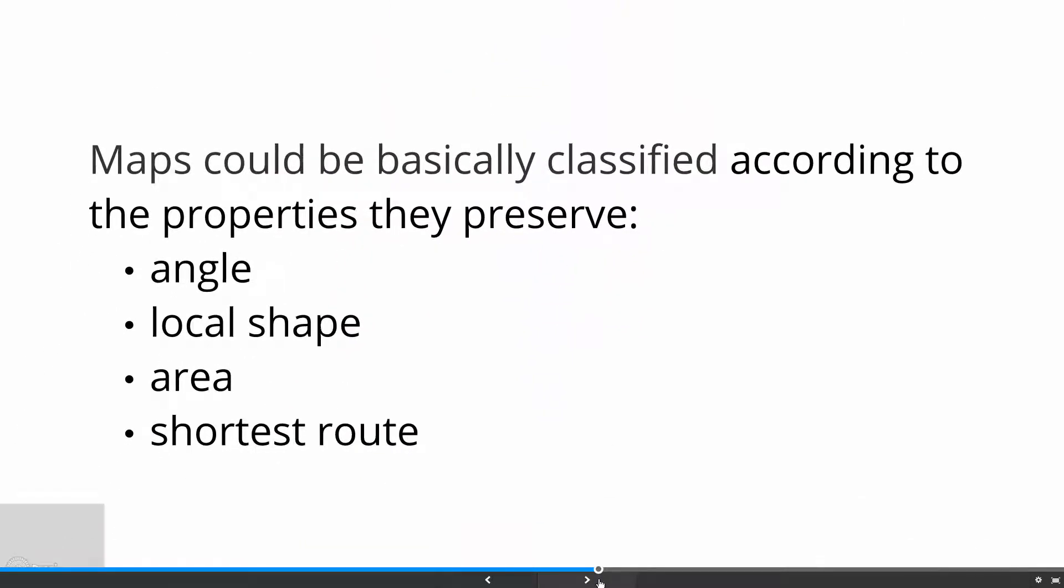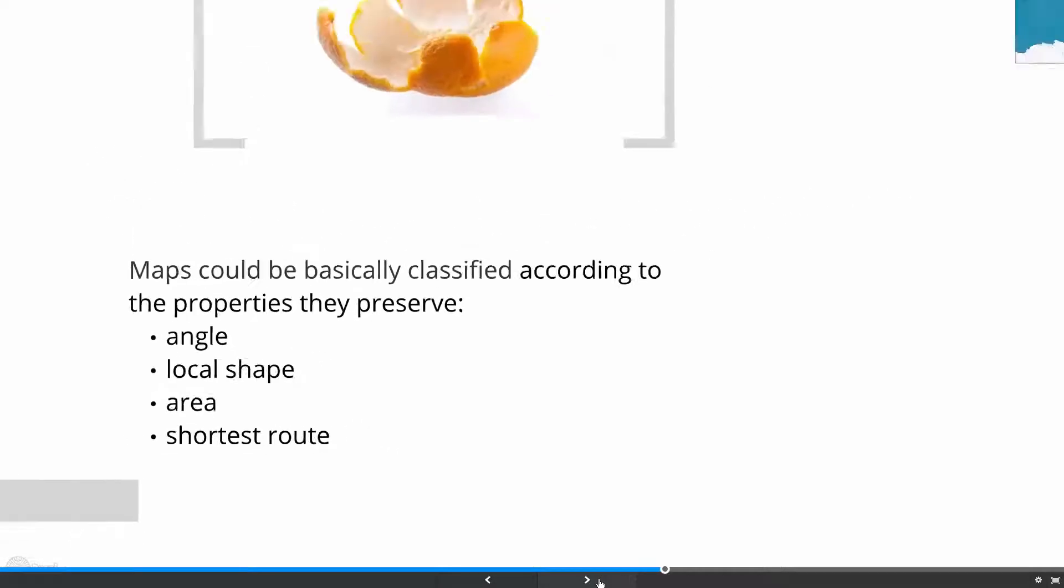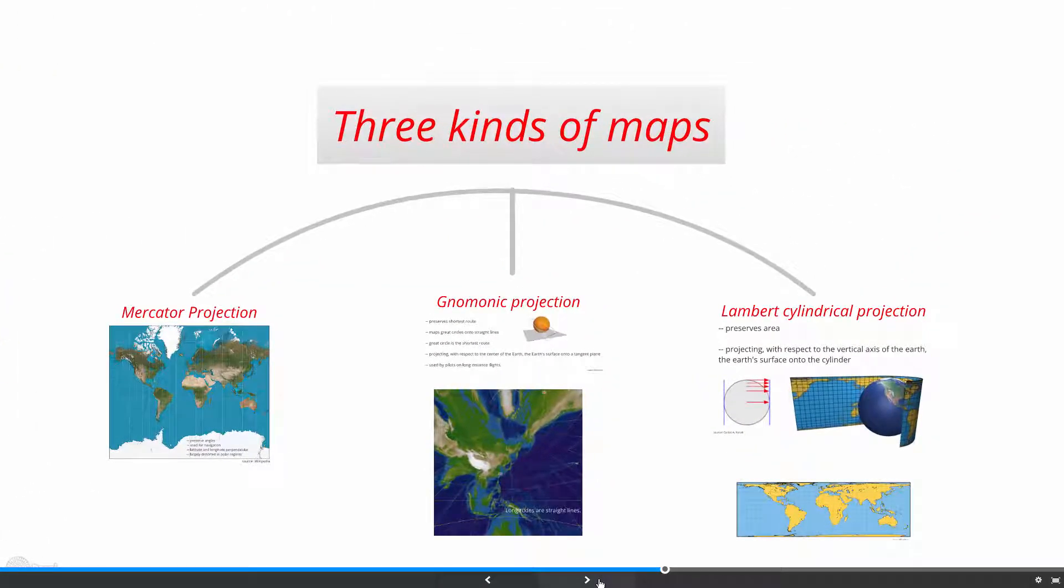Although maps are always inaccurate, there are some properties that they can preserve. Maps can be classified according to these properties: angle, local shape, area, and shortest route. I'll introduce three kinds of maps which preserve different properties: the Mercator projection, Gnomonic projection, and Lambert cylindrical projection.